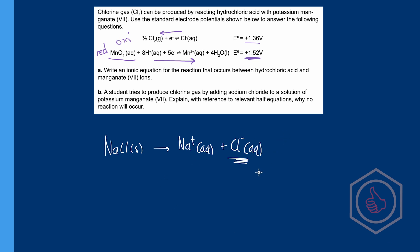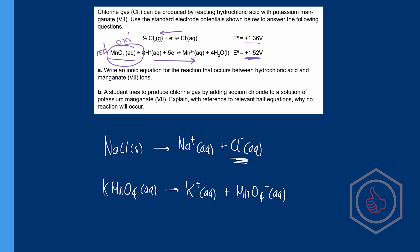We also know that a solution of potassium manganate 7, KMnO4 aqueous, dissociates into K+ and MnO4-. We know the MnO4- is what needs to be reduced. So why is no reaction going to happen? If we look at the half equation for the reduction of MnO4-, we need H+ ions. We need an acid present to provide H+ ions for that reduction half equation. If we just have a solution of KMnO4 and NaCl, we don't have any H+ ions, so the reduction of MnO4- can't happen.